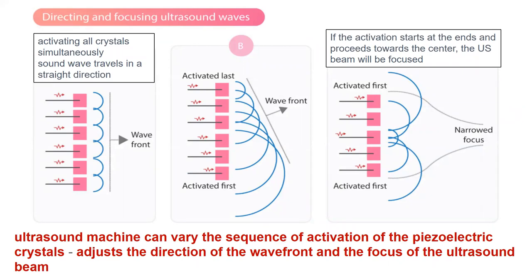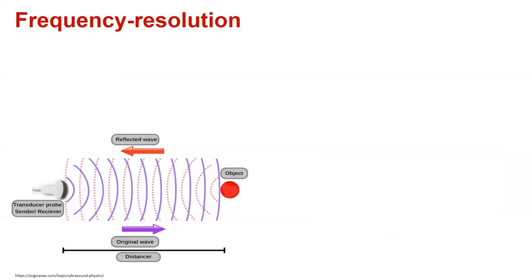Ultrasound machines can vary the sequence of activation of the piezoelectric crystals and adjust the direction of the wavefront and the focus of the ultrasound beam. If we activate all crystals simultaneously, the sound waves travel in a straight direction. If we activate the lateral piezoelectric crystals first and proceed toward the center, the ultrasound beam will be focused.